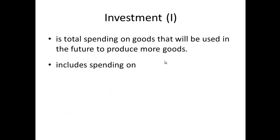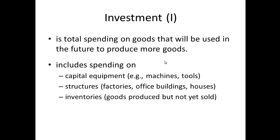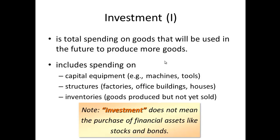The next component in the calculation for GDP is investment. Here, investment is not the finance term — we're not talking about stocks, bonds, or mutual funds. From an economic standpoint, investment refers to those items that businesses use in order to run. It also includes the home that you purchase, not the home you rent. Those are what we consider investments.